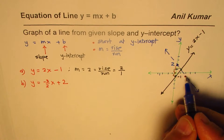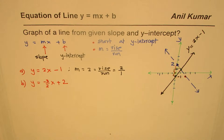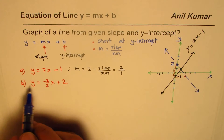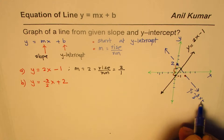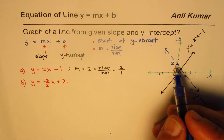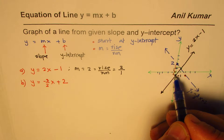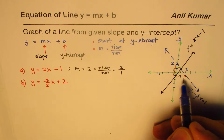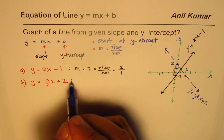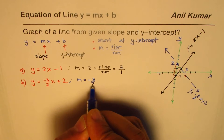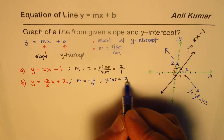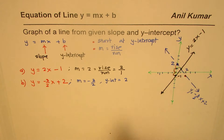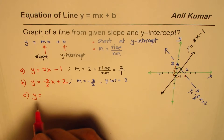Joining those two points we get a line. This line is y = -3/2 x + 2. The second point has an x-value of 2 and a y-value of -1. So slope m = -3/2 is rise over run, and y-intercept = 2, which can also be written as the point (0, 2).